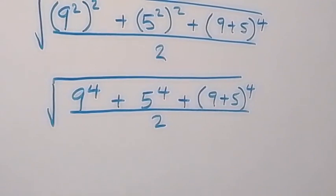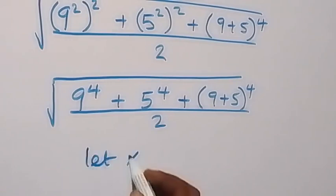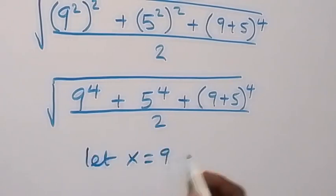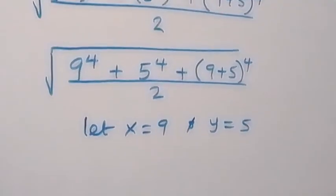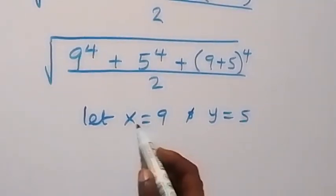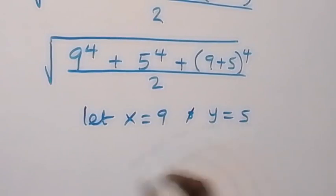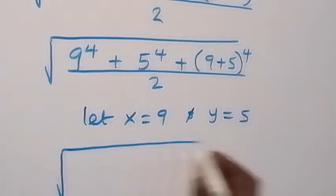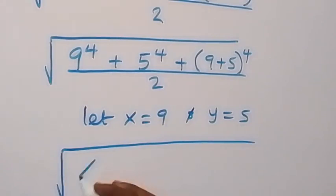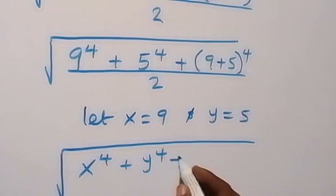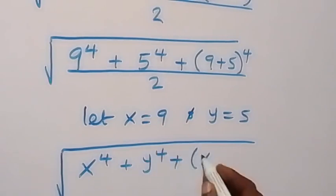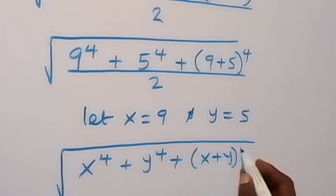Now 9 and 5 are common here, so let's use letters to make this easier. Let x be equal to 9, and y be equal to 5. Then we can substitute 9 as x and 5 as y. This becomes square root of x raised to power 4 plus y raised to power 4, plus x plus y, all raised to power 4, divided by 2.